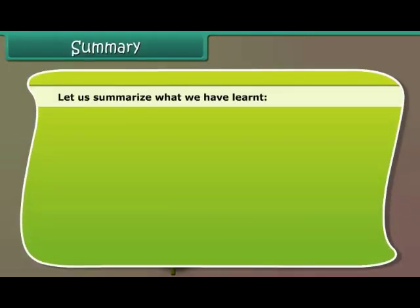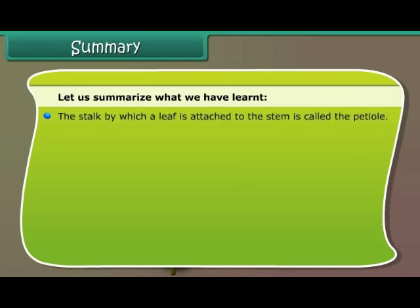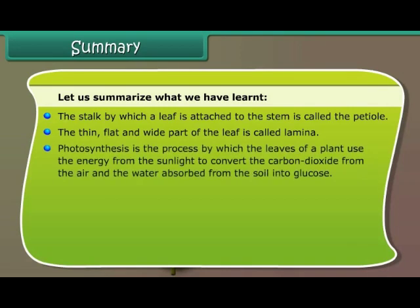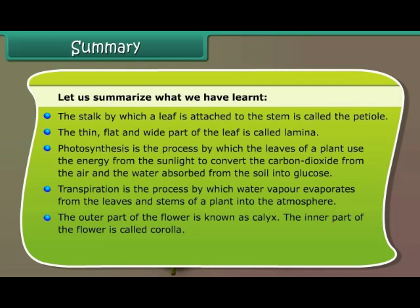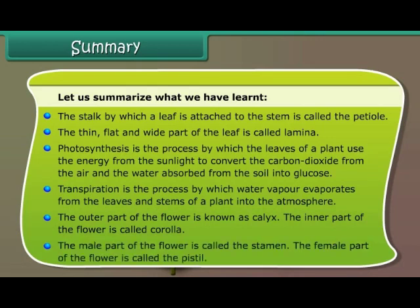Let us summarize what we have learned. The stalk by which a leaf is attached to the stem is called the petiole. The thin, flat and wide part of the leaf is called lamina. Photosynthesis is the process by which the leaves use energy from the sunlight to convert carbon dioxide from the air and water absorbed from the soil into glucose. Transpiration is the process by which water vapor evaporates from the leaves and stems into the atmosphere. The outer part of the flower is known as calyx. The inner part is called corolla. The male part of the flower is called the stamen. The female part of the flower is called the pistil.